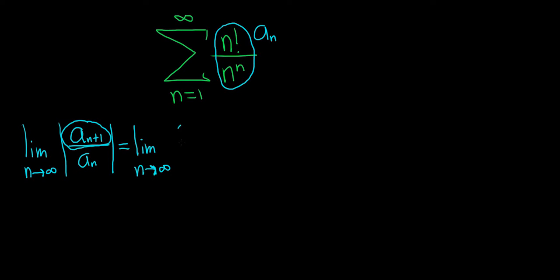So instead of n factorial, we have n plus 1 factorial. And then on the bottom, we have n plus 1 to the n plus 1. So all we've done so far is replace all of the n's with n plus 1's. Now we have to divide by a sub n. So instead of doing that, we're going to multiply by the reciprocal. So times, and now we have n to the n over n factorial.